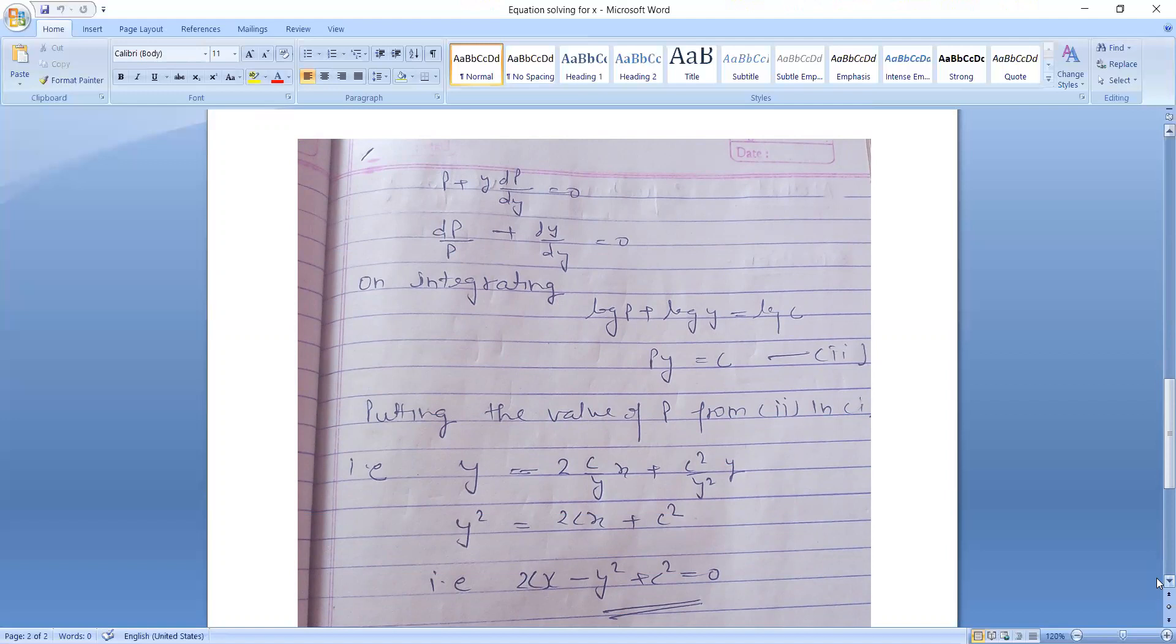This is equation second. Now putting the value of P in equation second and first, this is Y = 2(C/Y)X + C²/Y². This is Y² = 2CX + C², that is 2CX - Y² + C² = 0. Thank you.